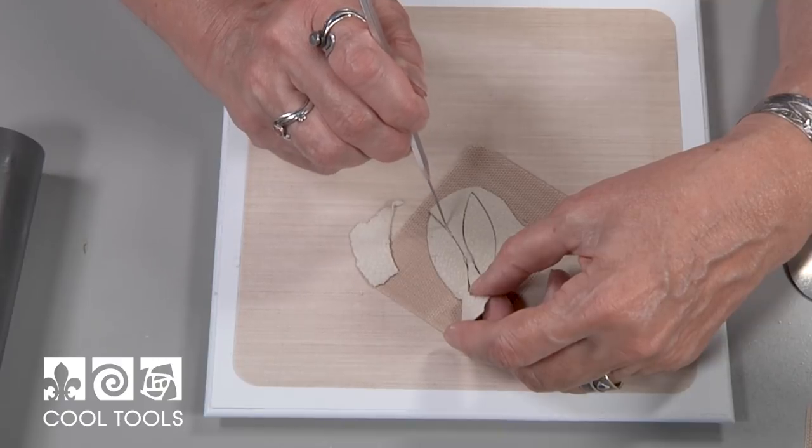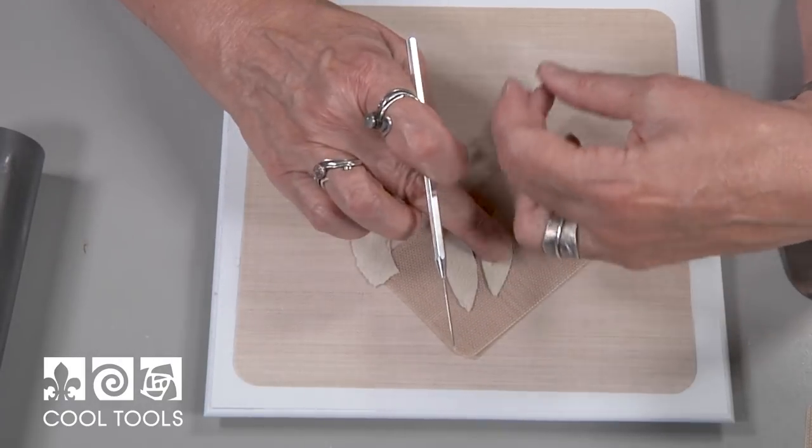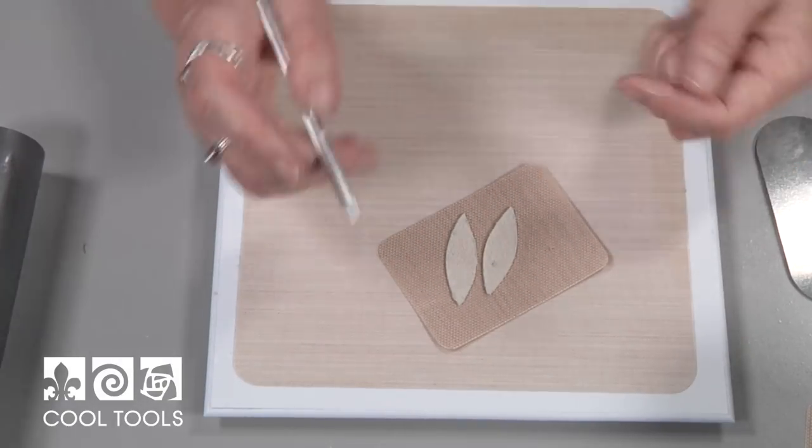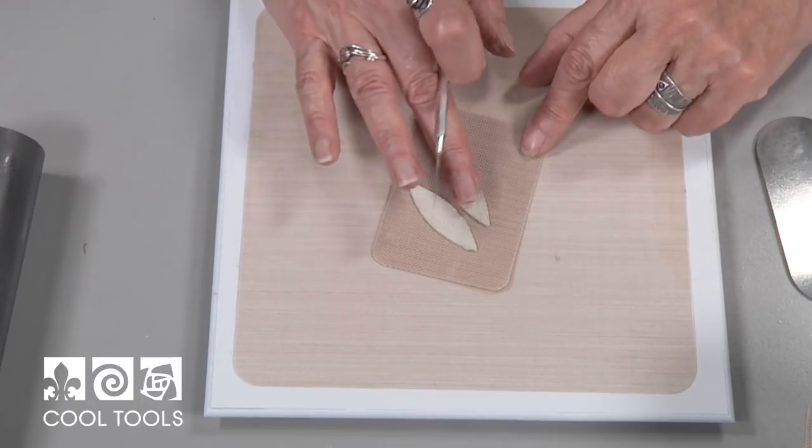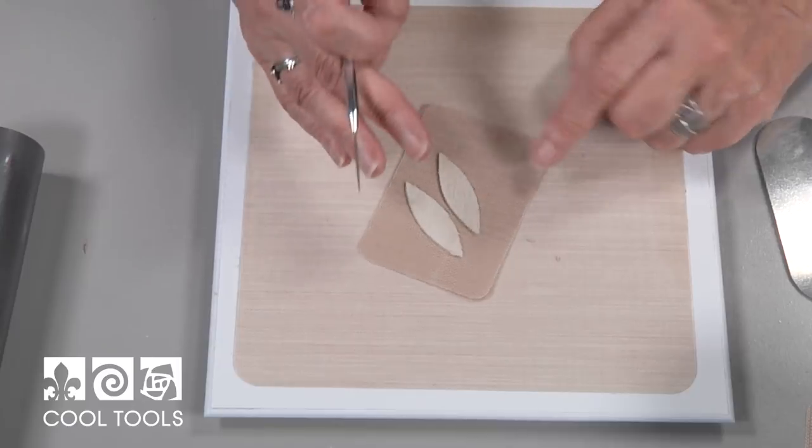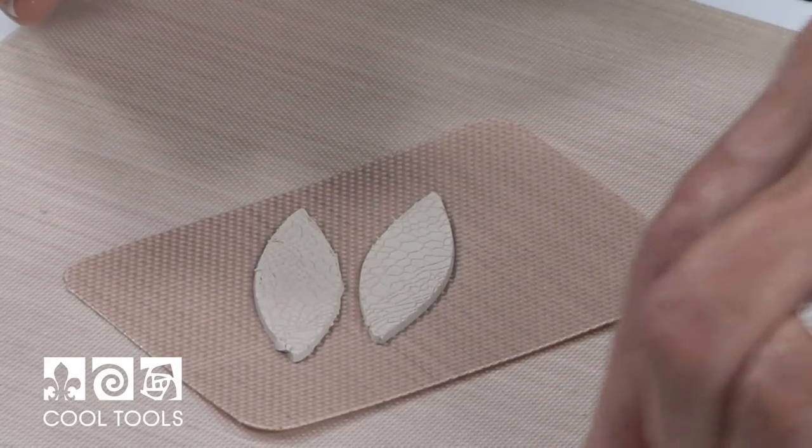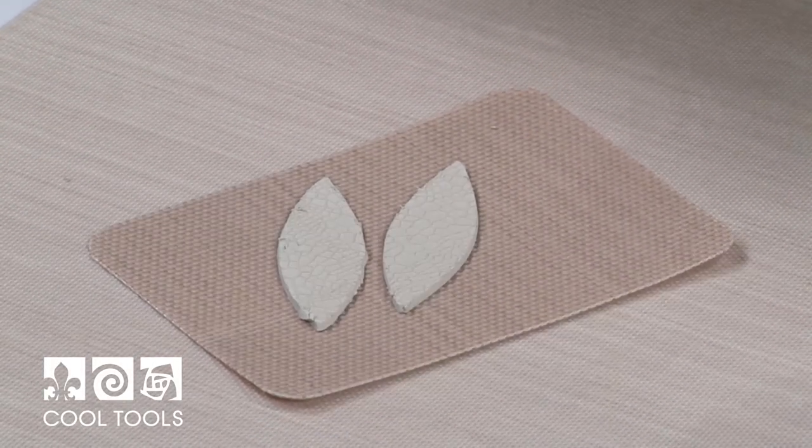If the clay is giving you a hard time, just kind of run your needle tool through there again. There we go. There's a little crumb on there. I'll just sweep that off to the side. There we go. Okay. The next step is rolling the edges.